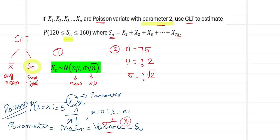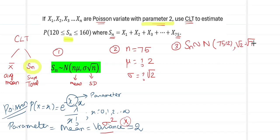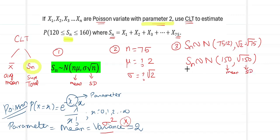Step 2 is now complete. Step 3 is to fix the data into the formula. So s_n follows a normal distribution with mean n·μ = 75 × 2 = 150, and standard deviation σ·√n = √2 · √75 = √150. So 150 is the mean and √150 is the standard deviation for s_n.